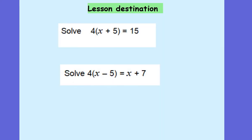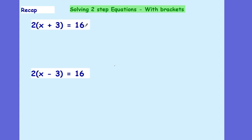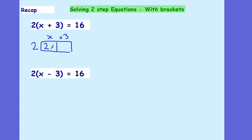Let's get into today's lesson. Here's our lesson destination for today — I want you to be able to solve at least the first question, if not the second question as well. Quick recap: solving equations with brackets. When you see an equation like this with a bracket in it, follow your instinct and expand that bracket. So I need to put x plus 3 along the top and 2 on the side. 2 times x gives me 2x, and 2 times 3 gives me positive 6. So now I've got 2x plus 6 equals 16.